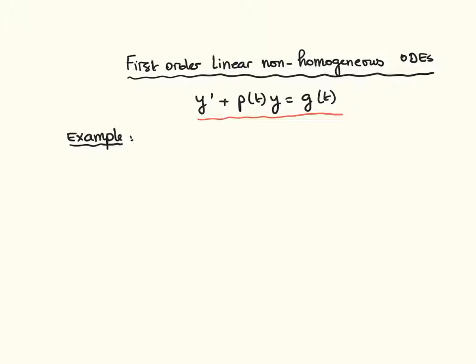Here is an example. I want to solve y dash plus 2t y equal to 4t. Well, the steps are like this.